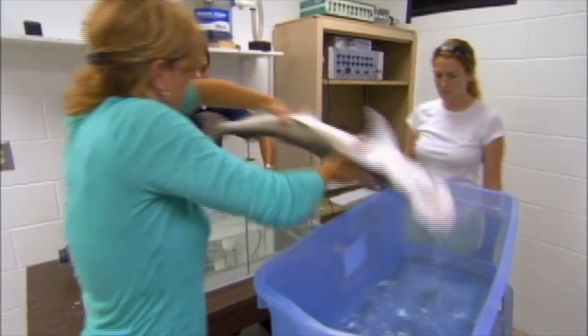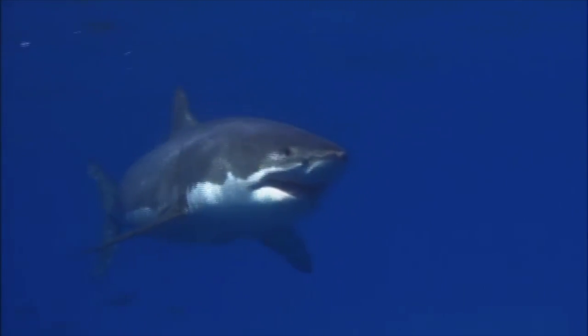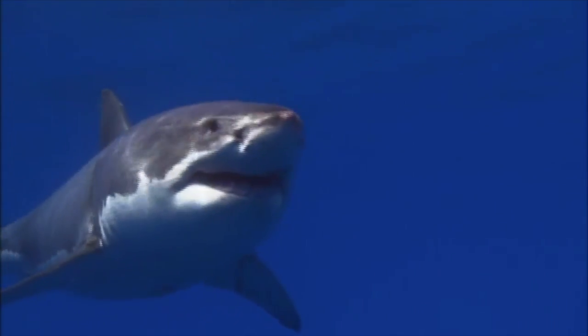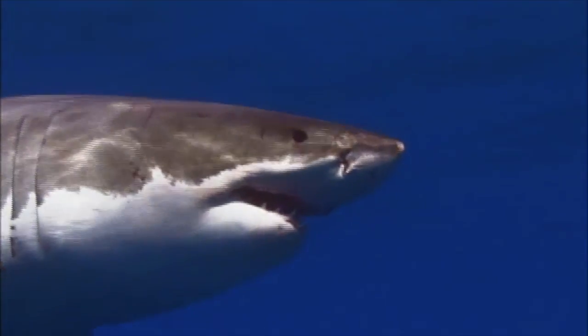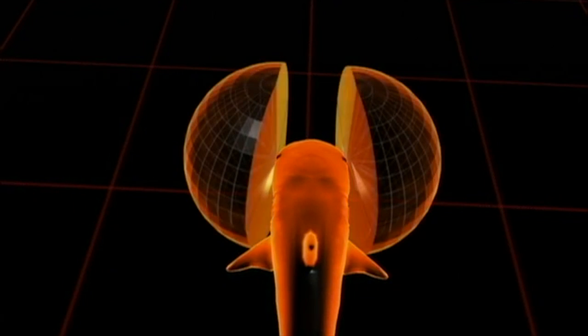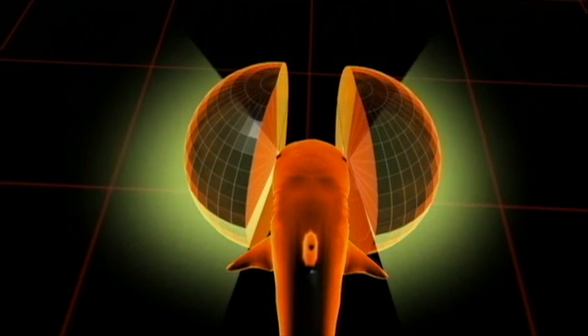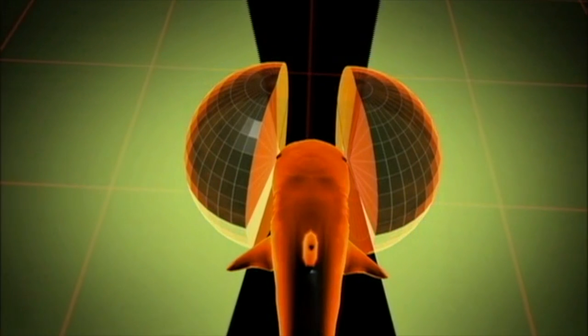But to predict what a great white can see, the team needs the bonnet head. By collecting data on this shark's spread apart eyes and comparing it to the closer set eyes of the lemon shark, the team can estimate what the tightly set eyes of a great white actually can see the world in front of their nose.